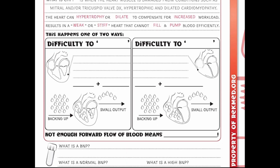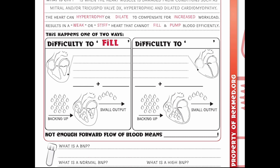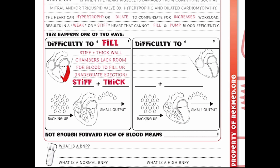There are two ways that congestive heart failure occurs. First, we can have difficulty to fill, which means the walls are stiff and thick, so the chambers lack room for blood to fill up, resulting in inadequate ejection. Looking at our ventricle walls here, we can see these ventricular walls are very enlarged and hypertrophied, so there's not a lot of extra room inside because the muscle has grown so much. Because they're bigger, this is what makes them stiff and thick — and since there's less room to fill up, it's going to have a much harder time squeezing out. Because of this, we're going to see that backing up of blood and a small output.